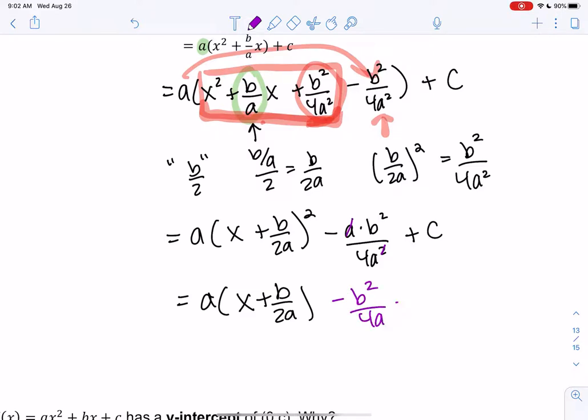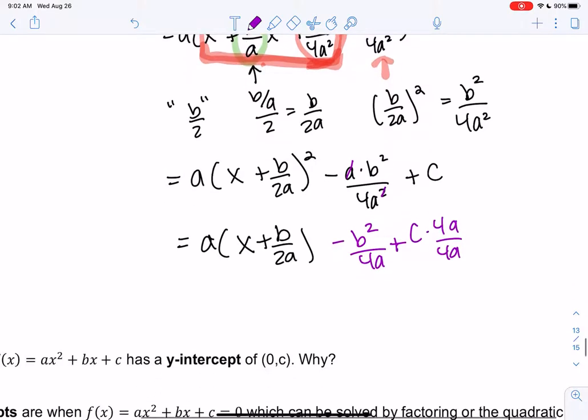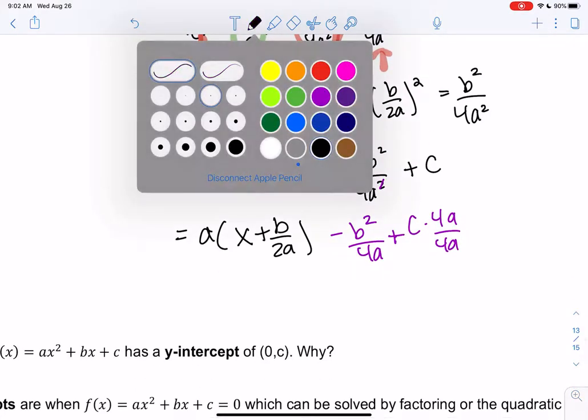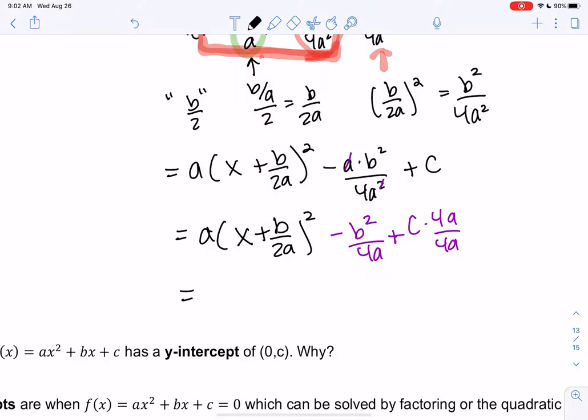So 1a goes away. We get b squared over 4a. So then we can do c over 4ac over 4a. You'll notice it looks kind of familiar, but we're actually going to give you a shortcut.